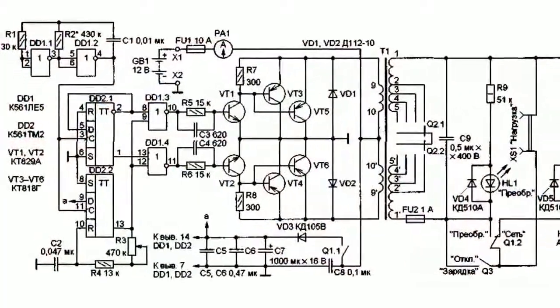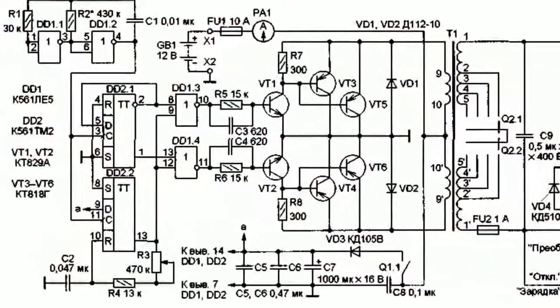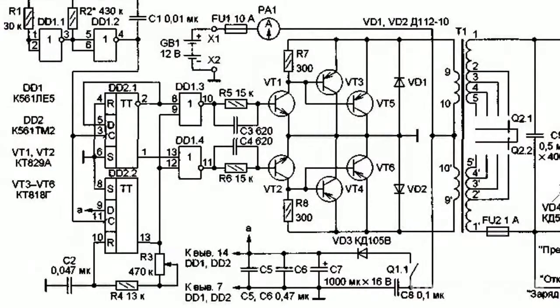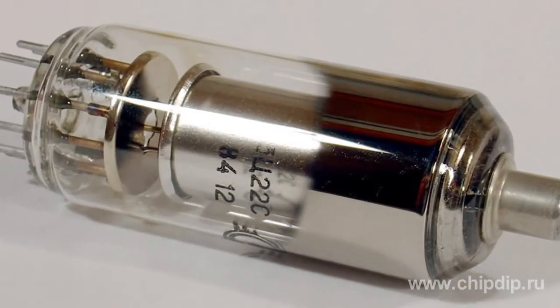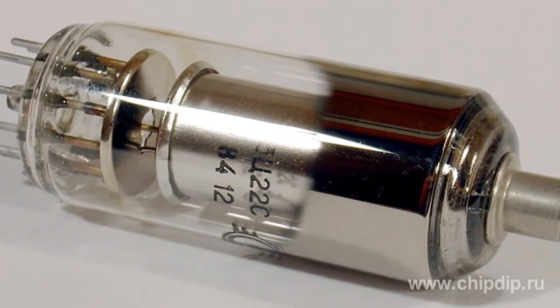Diodes, transistors, tunnel diodes, ferrite cores with square hysteresis loops, and vacuum and gas-filled lamps are used as switches.